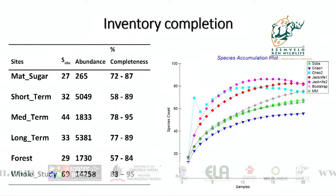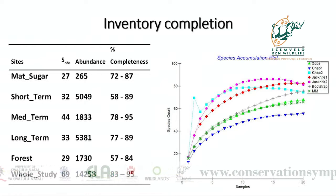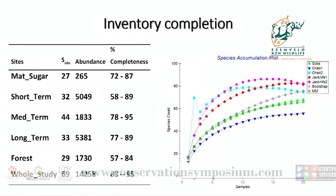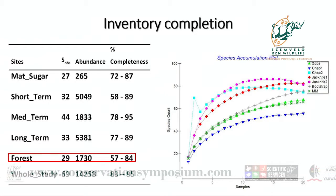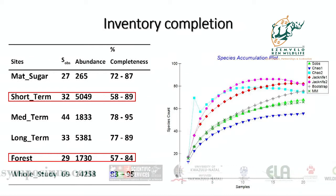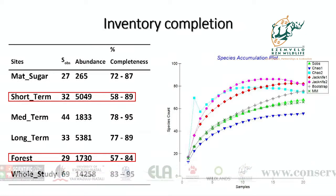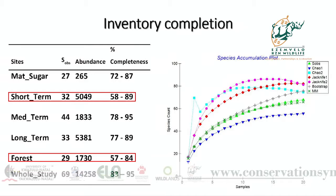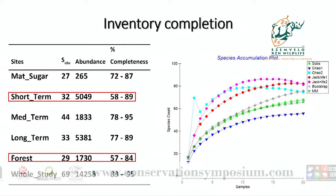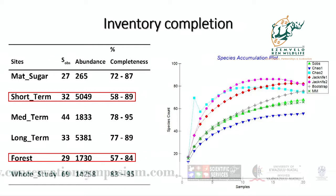For inventory completeness, we found that for almost all the sites, the inventory completeness based on six different estimators closely converged to the highest observed species richness, and almost all of them were more than 70%, except for forest as well as the short-term restored site. The short-term restored site's lower completeness may be due to a high level of disturbance there, while for the forest site it may be because of wire smugglers we found there, which might also play a role. For the species accumulation curve, we found that our sampling was representative, based on six richness estimators.